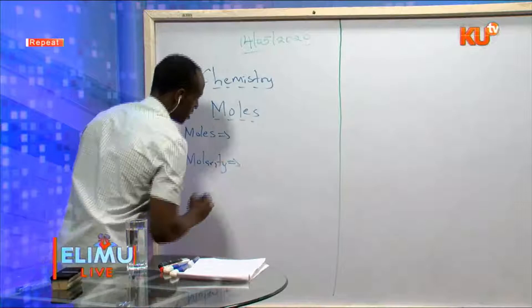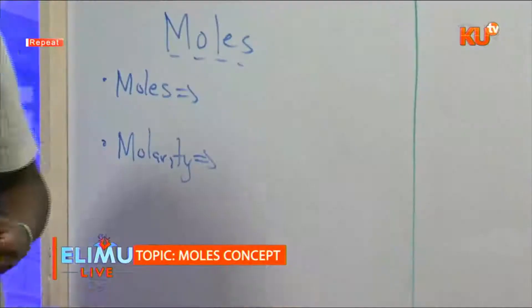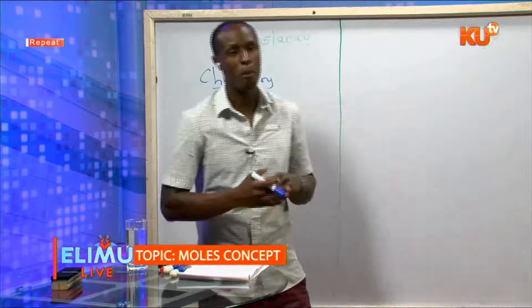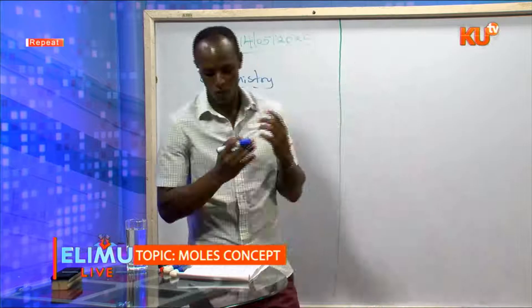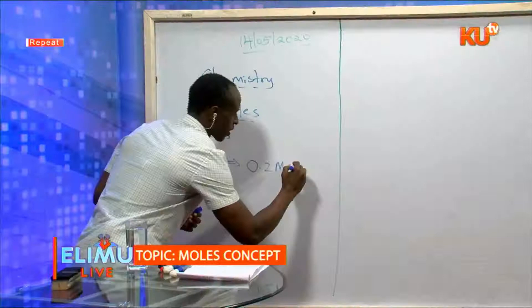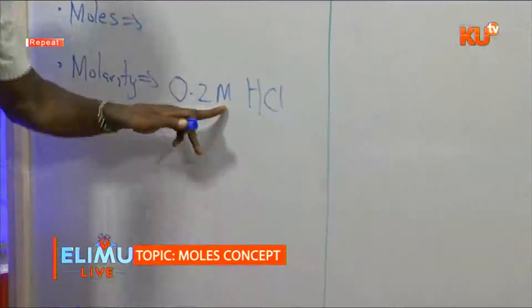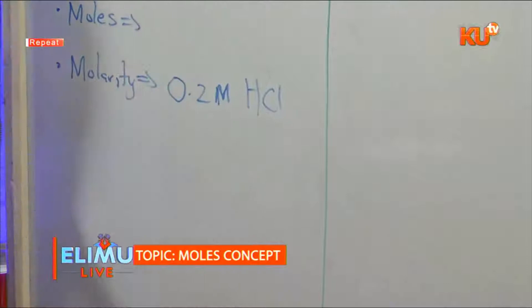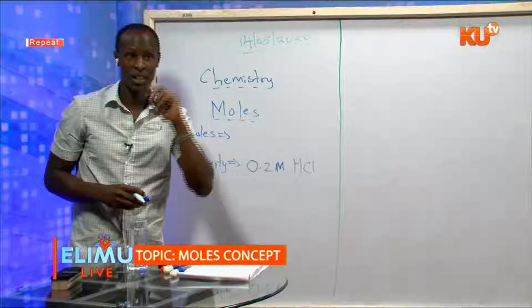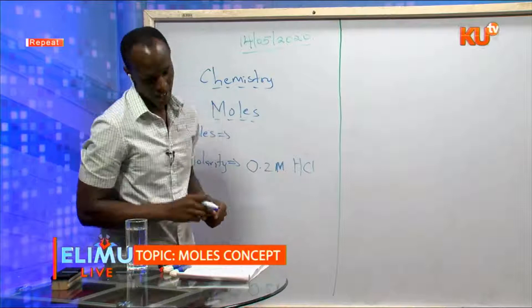The second term we are defining is MOLARITY. MOLARITY mainly goes with solutions. You can define it as the number of moles per liter in a solution. For example, 0.2 M HCl — HCl is the chemical symbol for hydrochloric acid. When you see 0.2 M, that's the unit for MOLARITY. It means HCl has 0.2 moles in one liter.